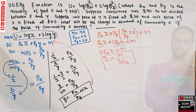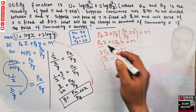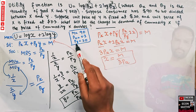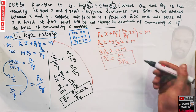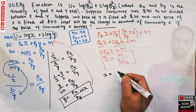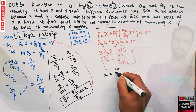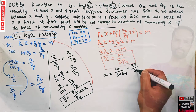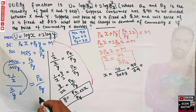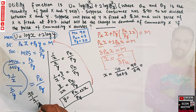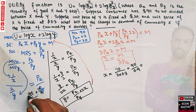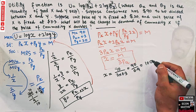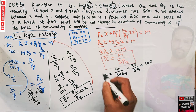Now we plug in the initial values. Income M = 90, initial price of X Px = 0.3, and we don't need the price of Y for this demand function. Initial demand X = 90 / (3 × 0.3) = 90 / 0.9 = 90 / (9/10) = 90 × (10/9) = 100. So the initial quantity demanded is X = 100.